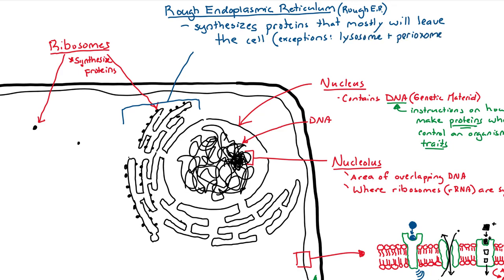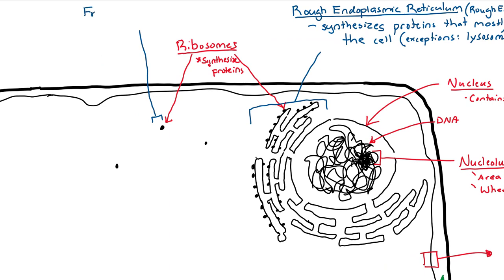There are exceptions, though. Lysosomes and peroxisomes do get their proteins from the rough ER, even though they're inside the cell. So rough ER makes proteins that leave the cell or become part of the membrane, with two exceptions.